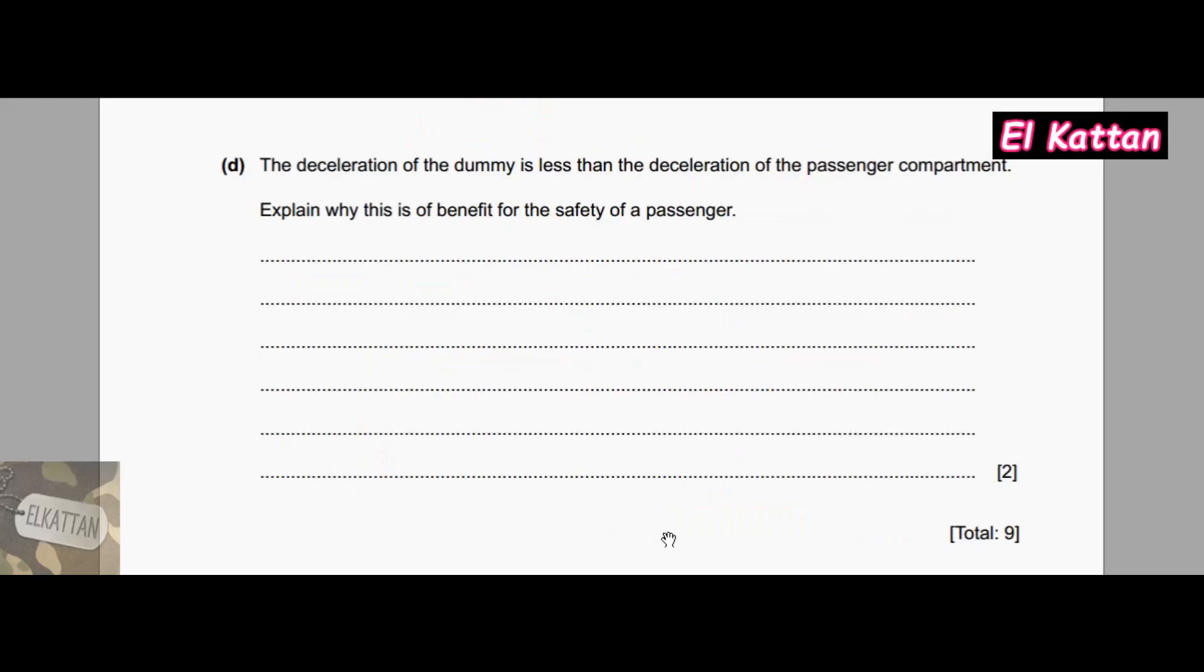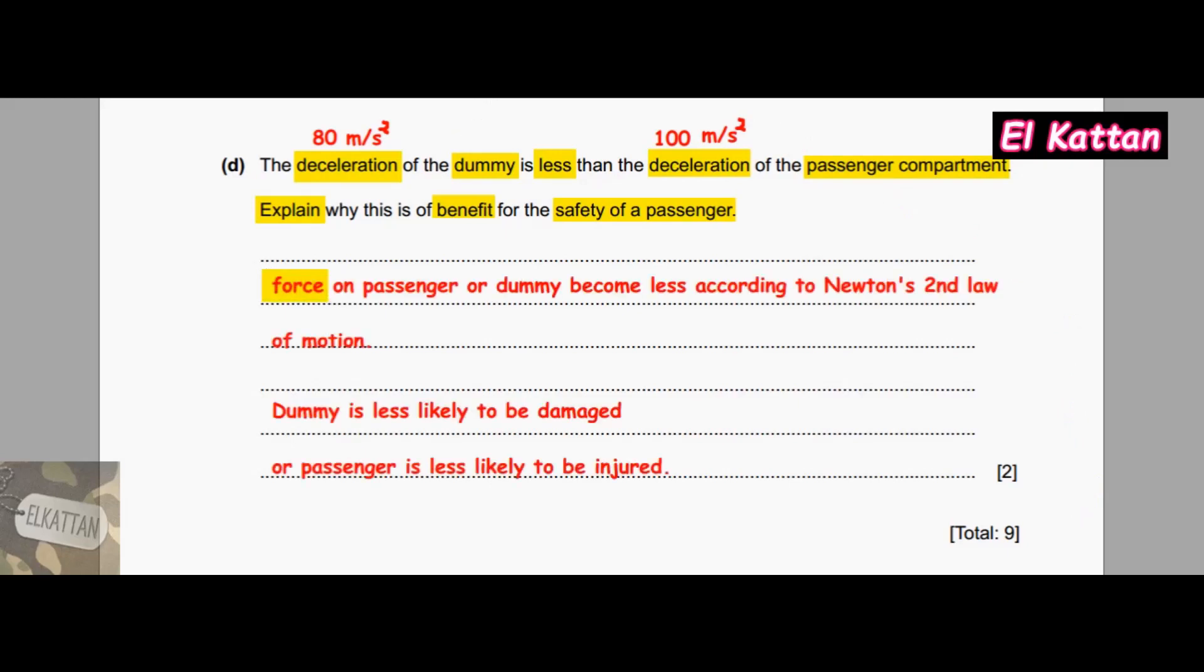For part D, the deceleration of the dummy is less than the deceleration of the passenger compartment. Explain why this is of benefit for the safety of a passenger. Deceleration of dummy is 80 m/s², and deceleration of the passenger compartment is 100 m/s². The impact force on passenger or dummy becomes less according to Newton's second law of motion. Dummy is less likely to be damaged, or passenger is less likely to be injured.